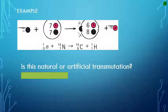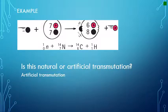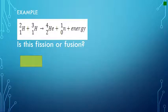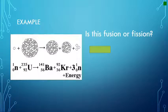Here is another sample reaction. Is this artificial or natural transmutation? Look closely at the reaction. This is an artificial transmutation because there are two reactants. Let's take a closer look at the two types. Is this a fission or fusion reaction? This is a fusion reaction because two light atoms are combining to form a heavier atom. Is this a fusion or fission reaction? This is a fission reaction because a heavy atom — uranium — is split into two smaller atoms, barium and krypton.